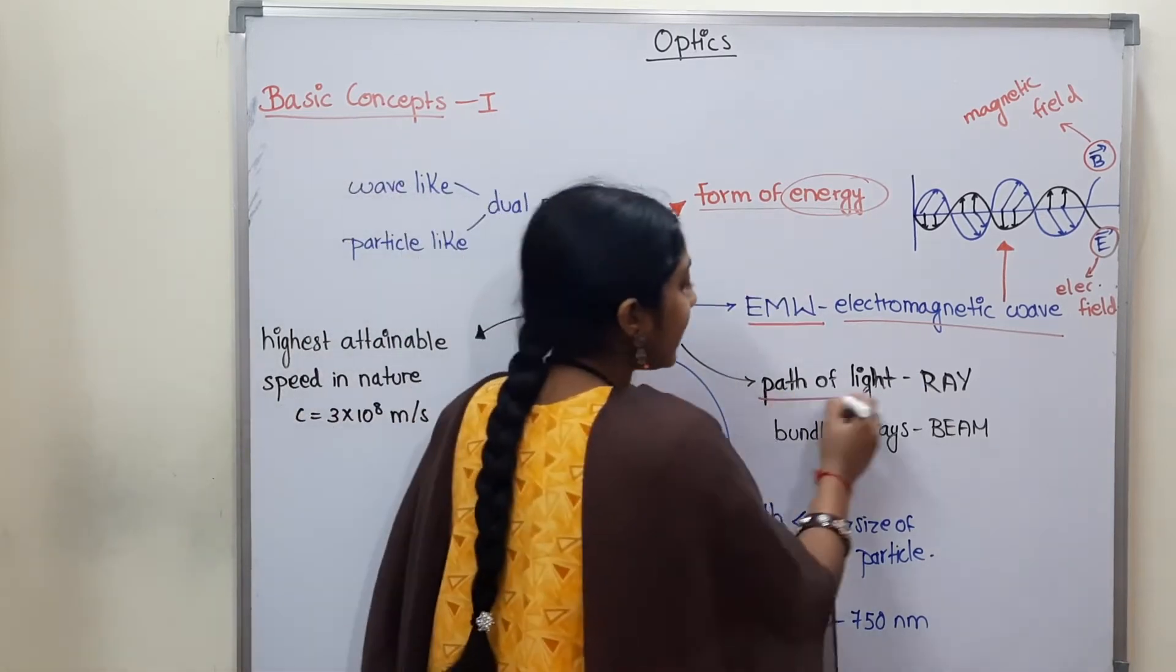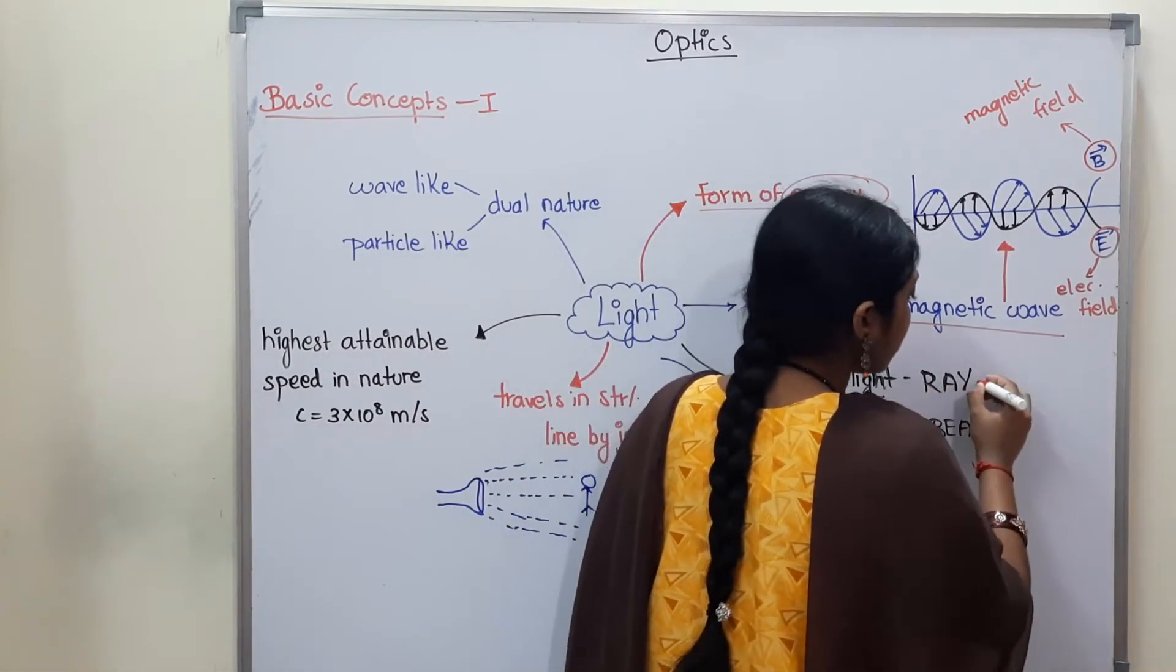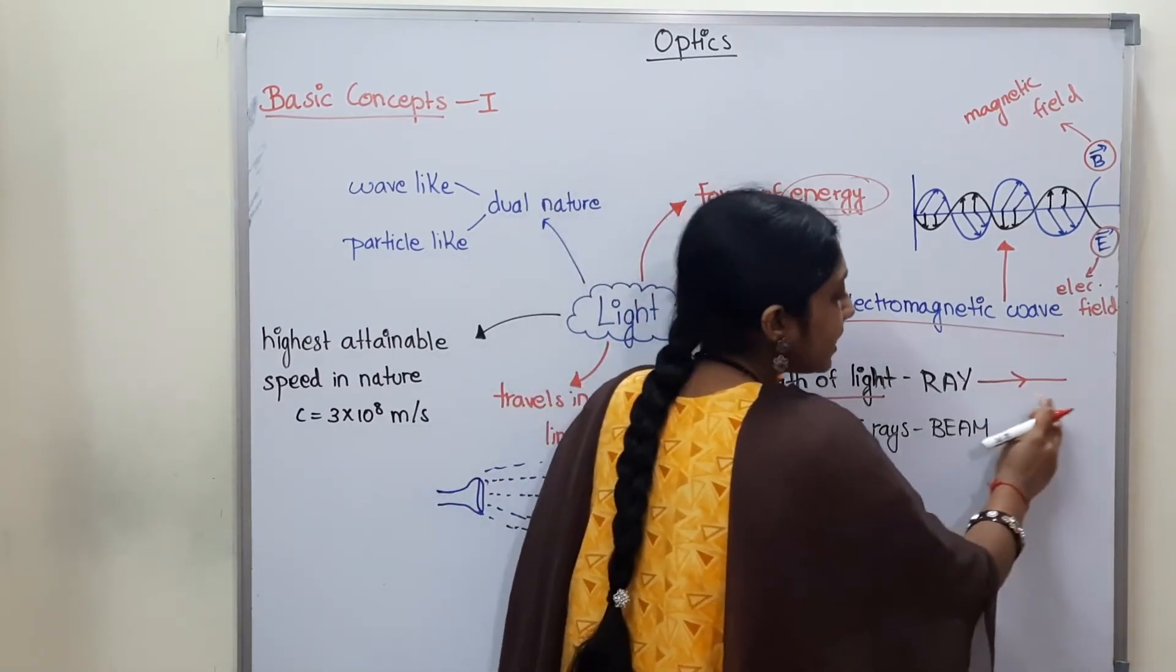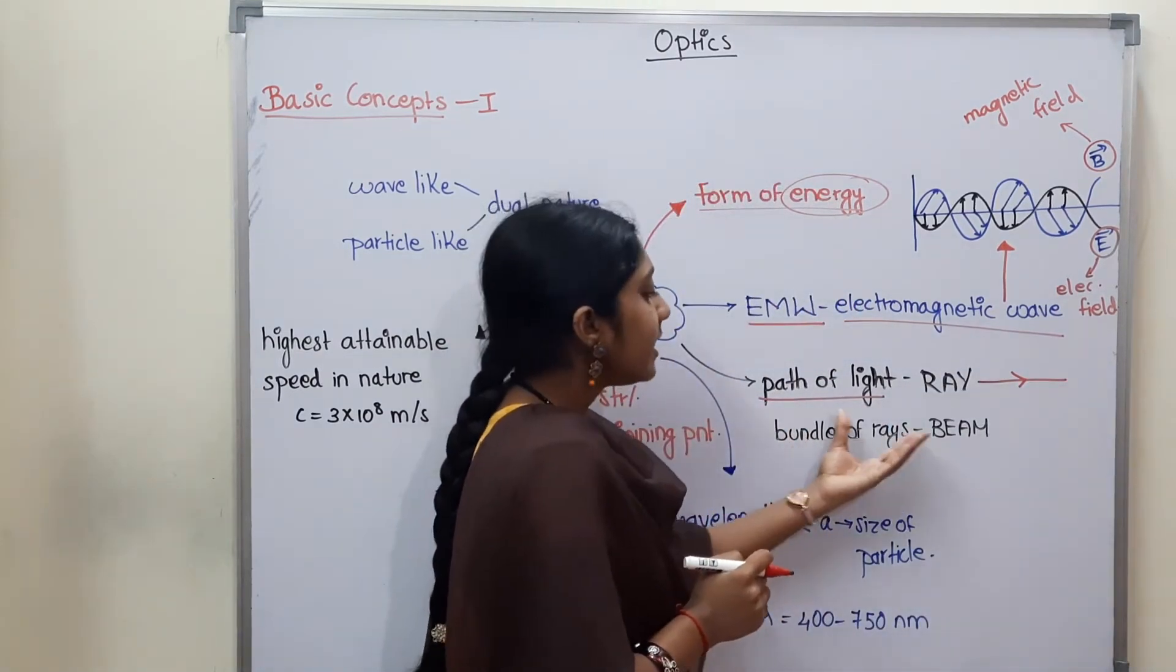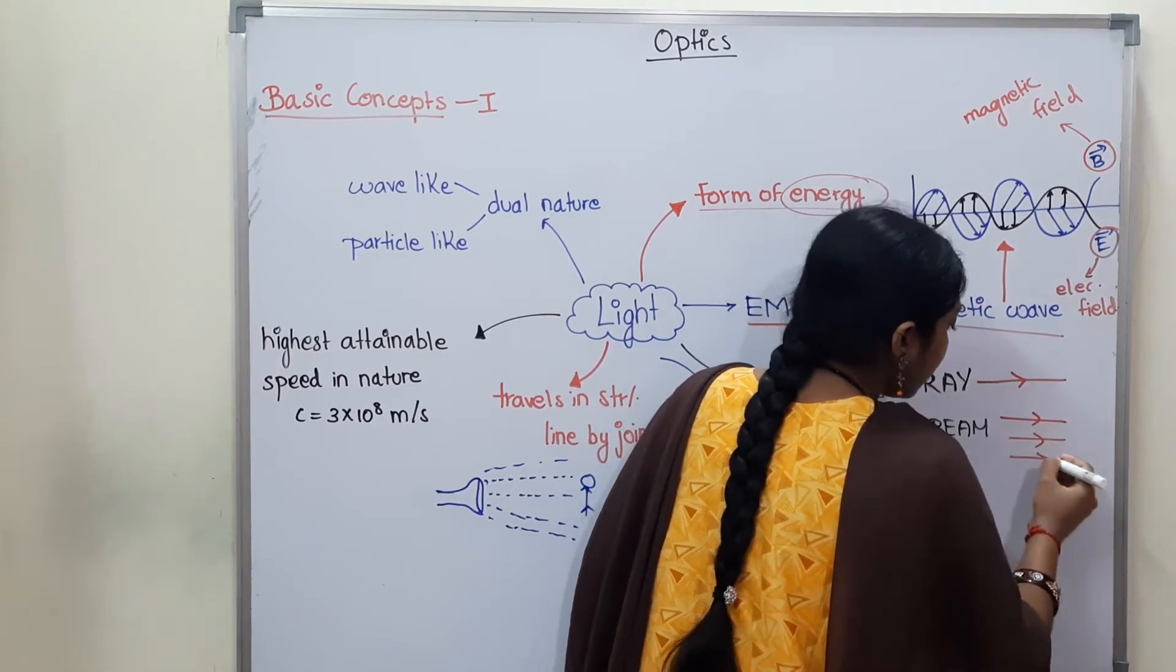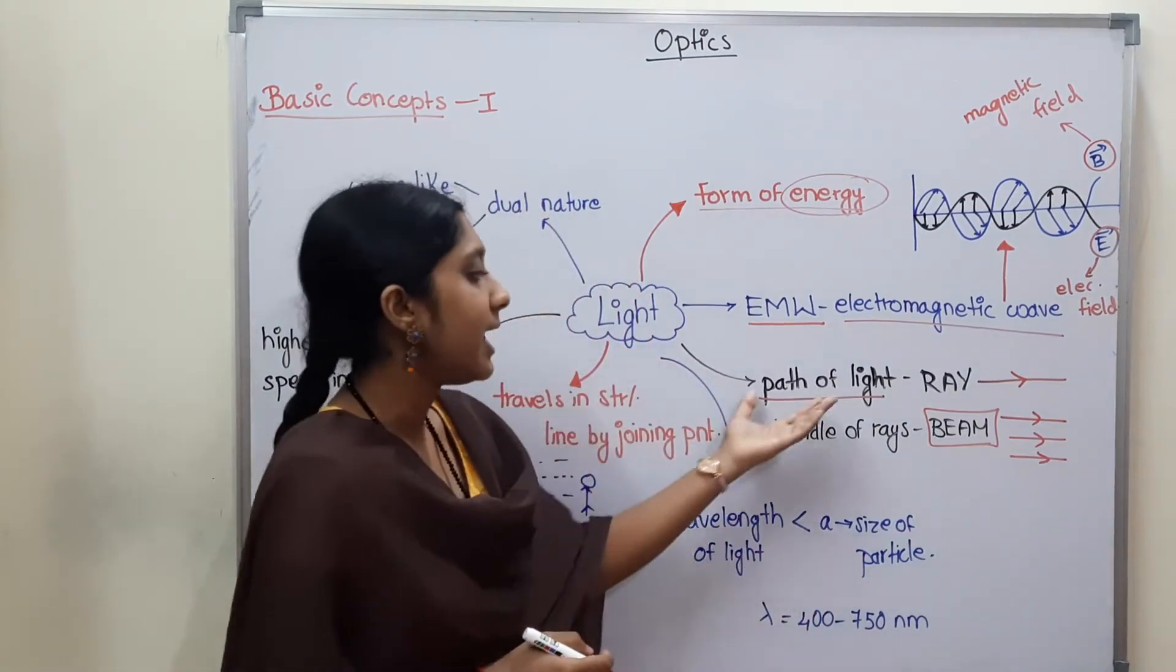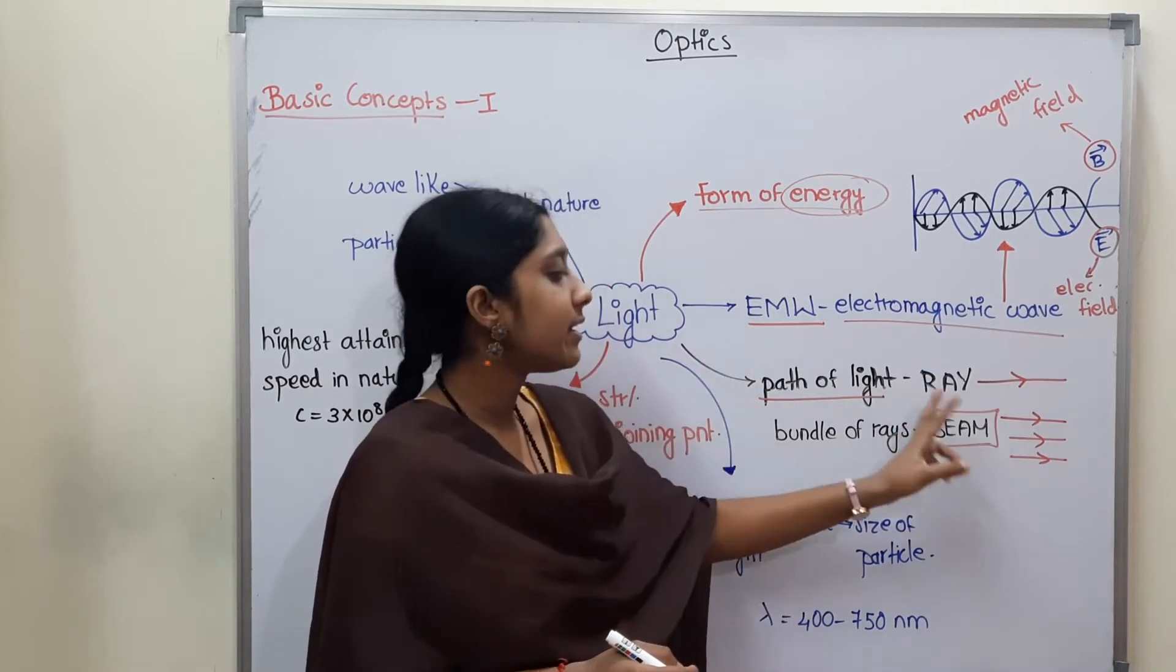So this is an electromagnetic wave. So light is an electromagnetic wave. So generally it's a form of energy. Next, path of light. Light travels in a direction. We say the path of light is a ray. So ray is a path of light. Like light, for example, in this ray we travel in this direction. We say bundle of rays - this means it's a large number of rays. So what do we say? Beam. So we say bundle of rays - beam. So path of light is a ray. This means it's a single ray. If you combine a large number of rays - beam.